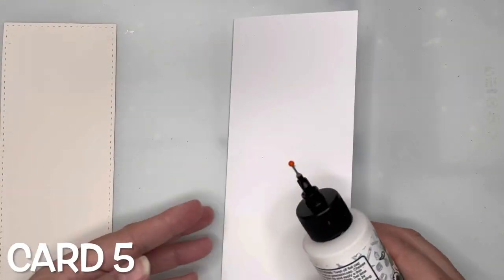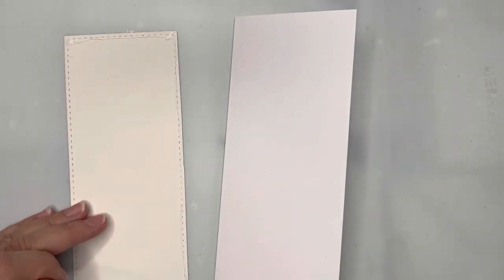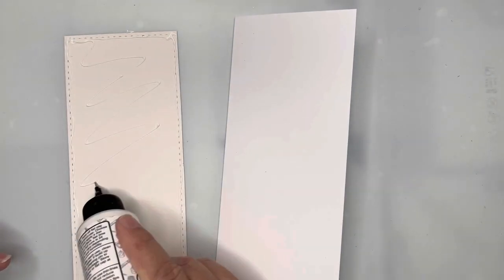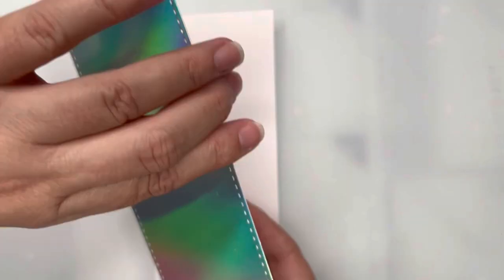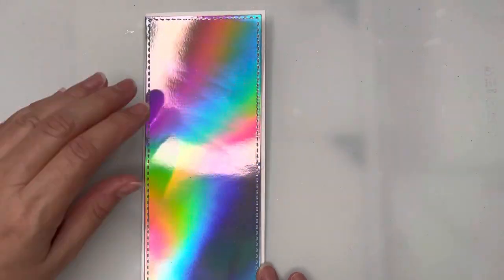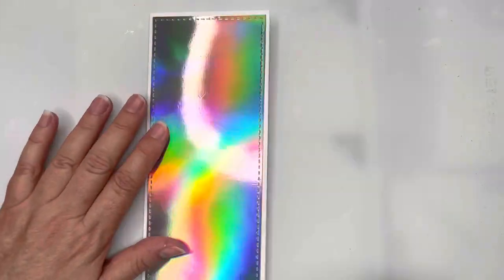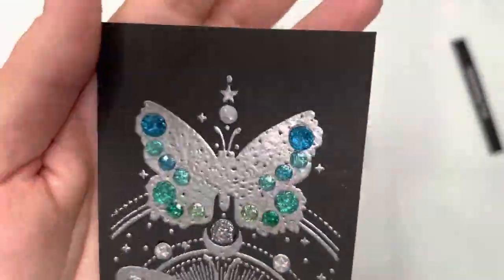Card number five is another slimline card and I've cut a large panel of holographic cardstock and that's going to cover the front of my card base. I'll attach that on there, just taking my time to wriggle it in position and then smoothing it down trying not to smear any glue.